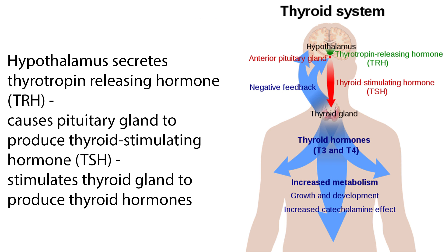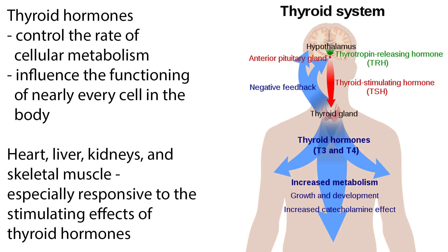The hypothalamus secretes thyrotropin-releasing hormone, or TRH, which causes the pituitary gland to produce thyroid stimulating hormone, or TSH, which stimulates the thyroid gland to produce thyroid hormones. Thyroid hormones control the rate of cellular metabolism, therefore influencing the functioning of nearly every cell in the body.